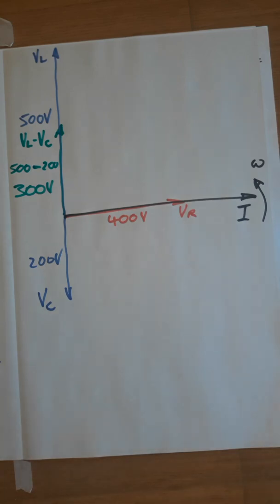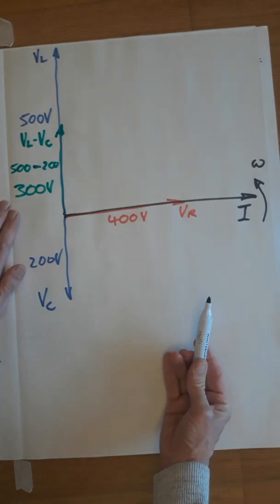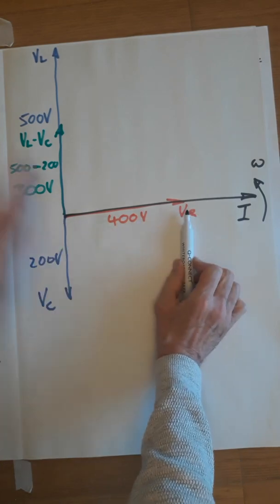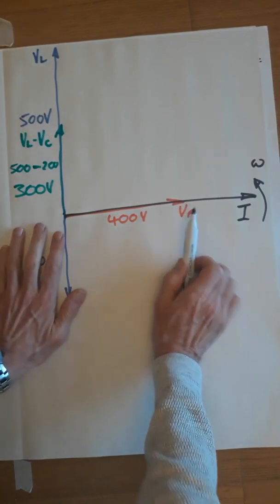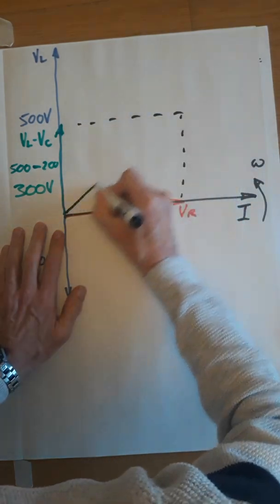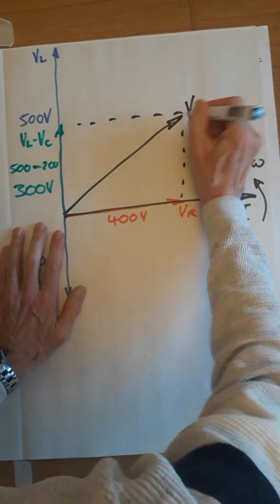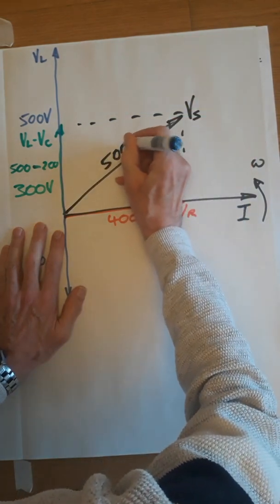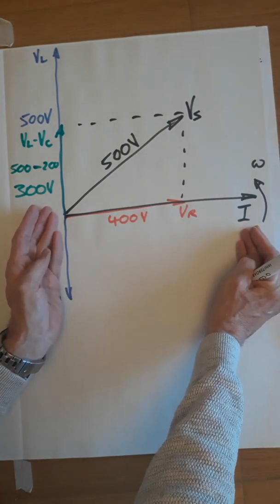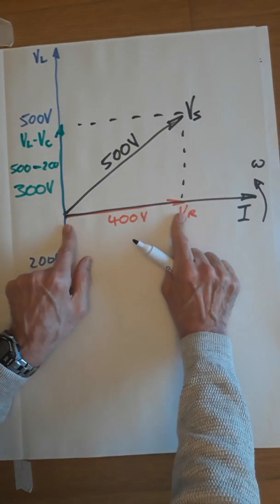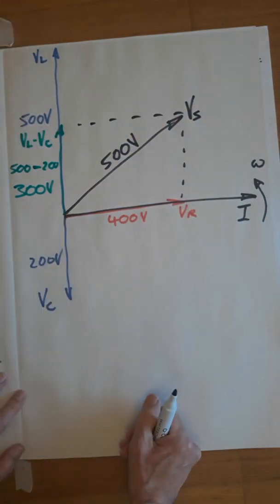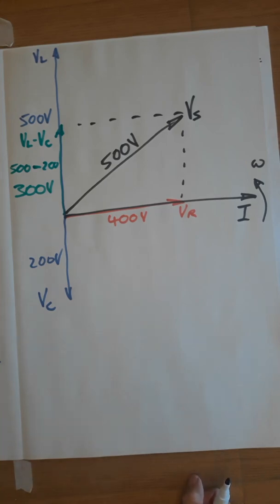From that, we can now find the supply voltage. And if you look, VR is 400. In this vertical axis, we've just got the 300. And if we do that, there is your supply, which would be 500 volts. You're going to do every step of this with a ruler. Perhaps 4 cm, 5 cm, 3 cm, 5 cm, 2 cm.